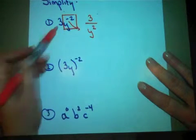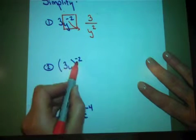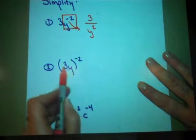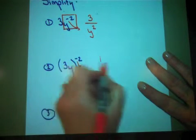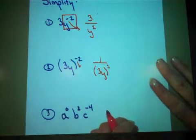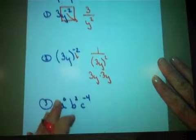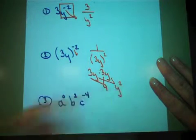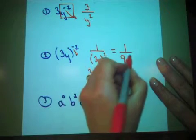Do you notice the difference between the first problem and the second problem? This time I had a set of parentheses, which means the negative 2 is actually affecting both of these terms. The negative means let's make this 1 over 3y squared. 3y squared means what's 3y times 3y: 3 times 3 is 9, and y times y is y squared. So this simplifies to the fraction 1 over 9y squared.